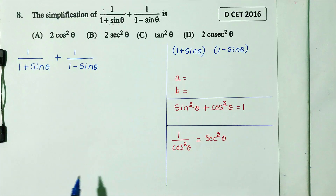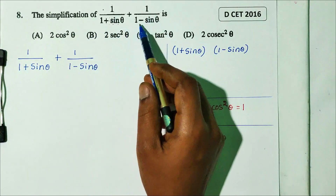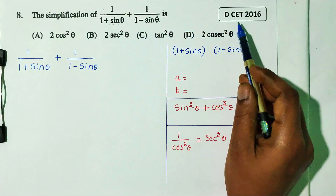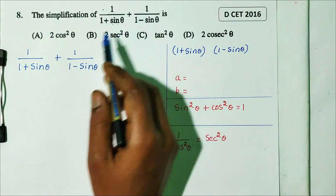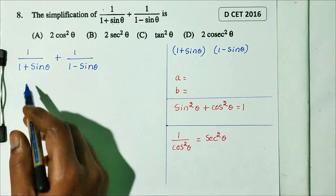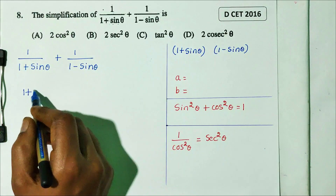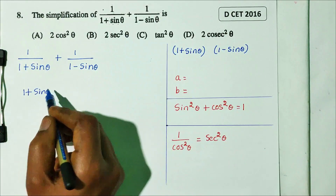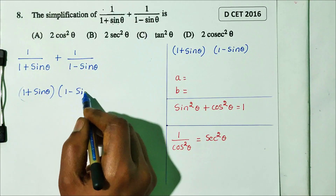DCT 2016 question number 8. The simplification of 1 divided by 1 plus sin theta, plus 1 divided by 1 minus sin theta. 4 options are there. First, take the LCM, which is (1 plus sin theta) times (1 minus sin theta).